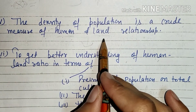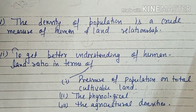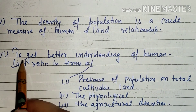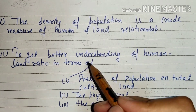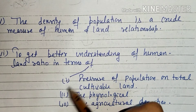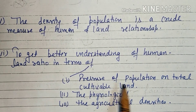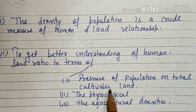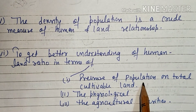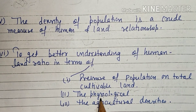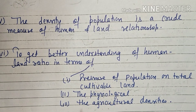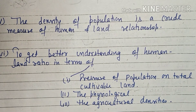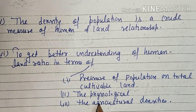The density of population is a crude measure of human and land relationship. It depends on what we need from the land — whether it is favorable for us or not. To get a better understanding of the human and land ratio, we look at three things: the pressure of population on total cultivated land, physiological density, and agricultural density. Land-human ratio depends on these three things.